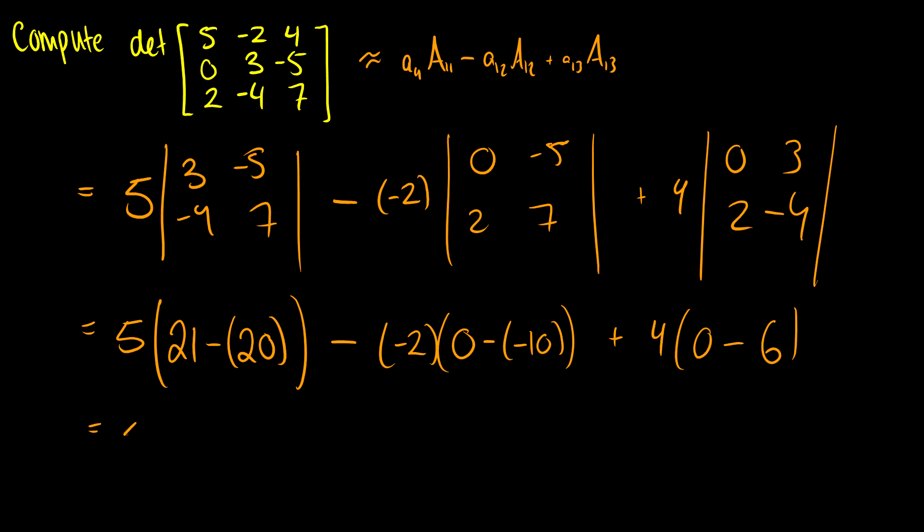Okay, so it's going to be 5 times 1, which is just equal to 5. We're then going to subtract. Okay, so we have negative 2 times 10, that's negative 20. So we're going to subtract negative 20. So we're going to add 20. And then we're going to add 4 times negative 6, which is negative 24. So our determinant is going to be 1.